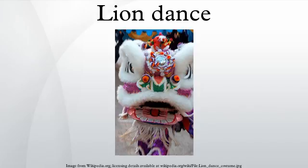Modern lion dance costumes are made to be very durable and some are waterproof. There are two main styles of Guangdong or Cantonese lion, the Futsan or Fo Shan, and the Hoc San or He Shan, both named after their place of origin. Other minor styles include the Fut Hoc and the Jiao Ga. The different lion types can be identified from the design of the lion head.